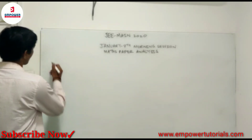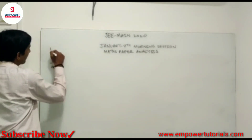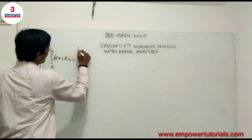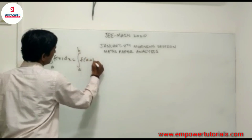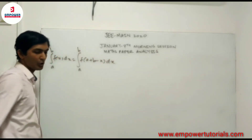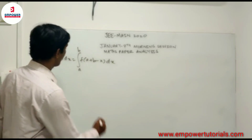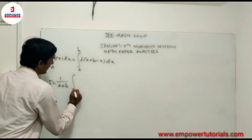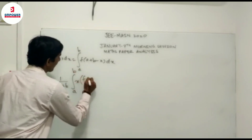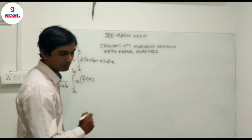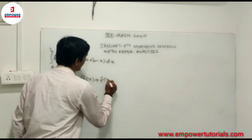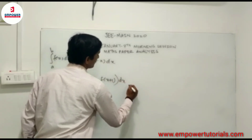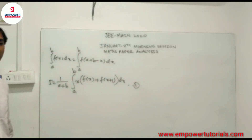The property used in this question is: the integral from a to b of f(x) dx equals the integral from a to b of f(a + b - x) dx. The given integral is I = 1/(a+b) times the integral from a to b of x·[f(x) + f(x+1)] dx. We call this equation 1.